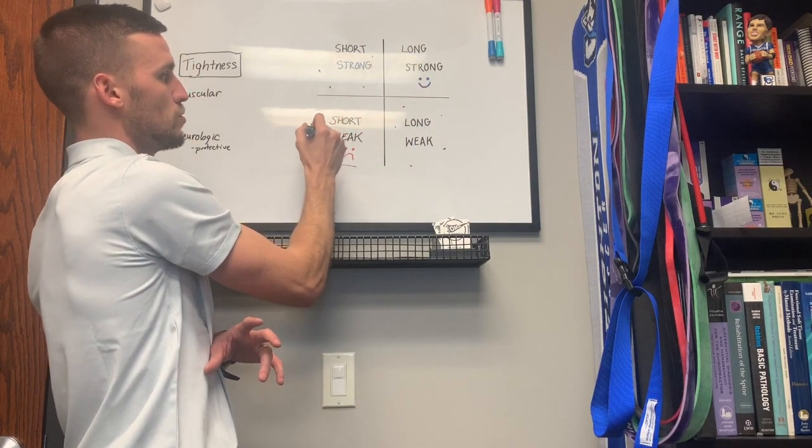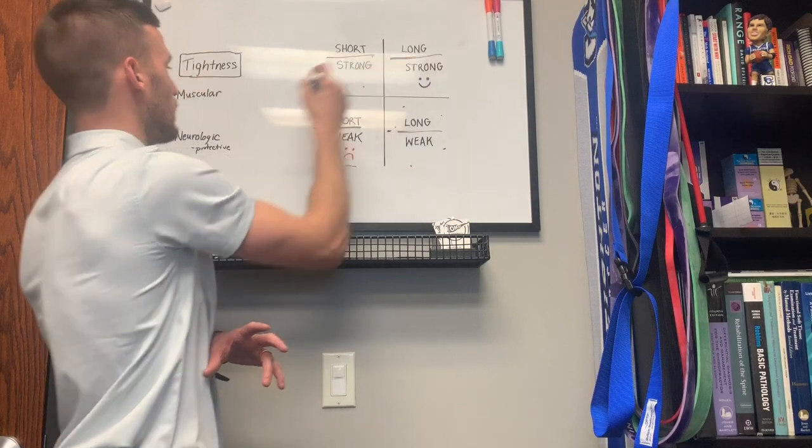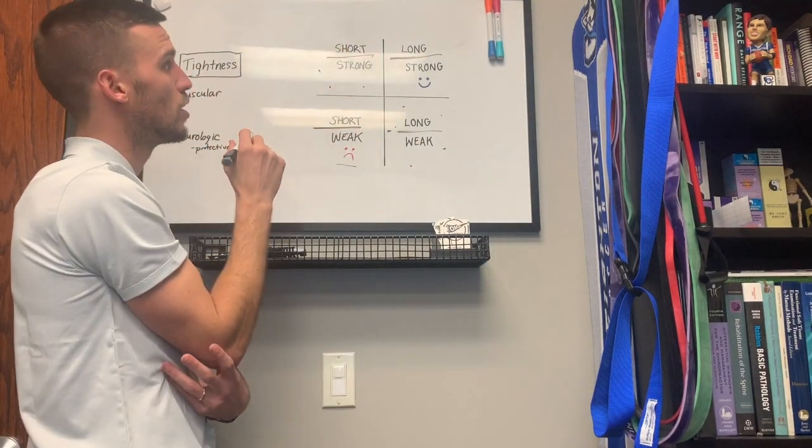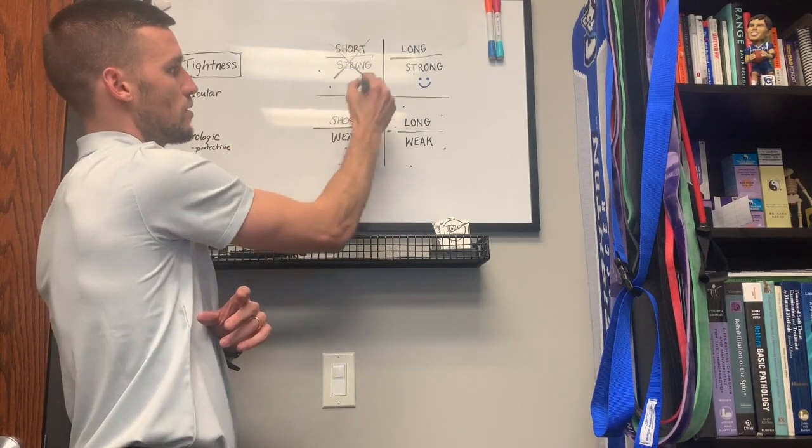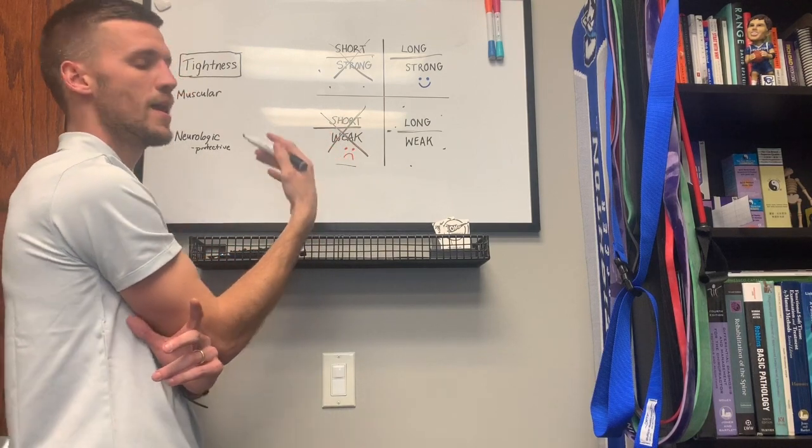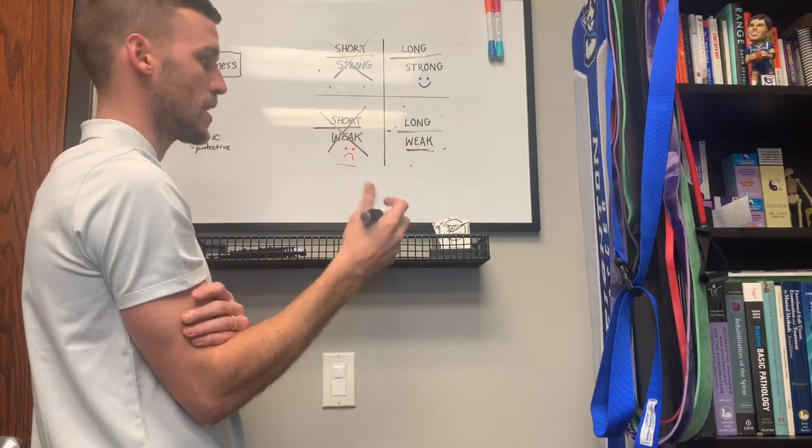So we're able to decipher first off muscular length via the straight leg raise. Are you short or are you long? So immediately I'm able to cross off the short part because her hamstrings weren't short, they were 90 degrees, it was adequate range of motion. Now I'm suspecting weakness, so I need a test for weakness using a manual muscle test.